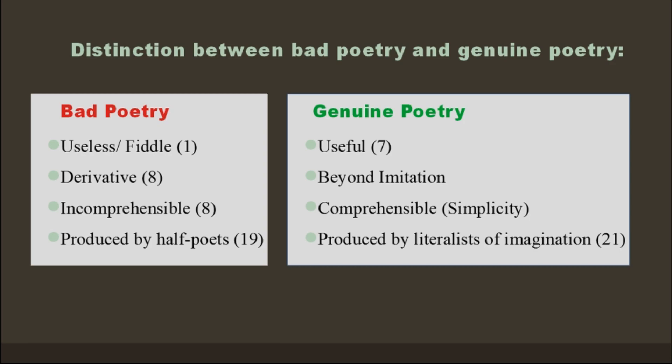Now let's look at what genuine poetry is in Moore's view. The first thing she says is that genuine poetry is something useful. In line 7: 'high sounding interpretation can be put upon them but because they are useful.' She says it's not just because of the high-sounding interpretation you can put in a poem that makes it genuine — the fact that it is useful is what makes it genuine.